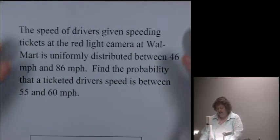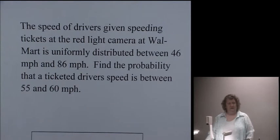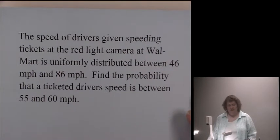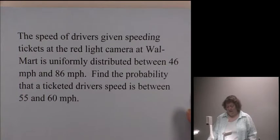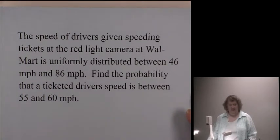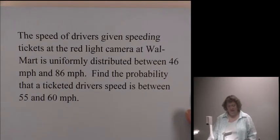So let's look, first of all, at the example that I have. In dealing with uniform distributions, we do not have a lot of examples to pull from. So for this one, I've kind of stretched it, and it may not be the best example, but it is the example I came up with. It says the speed of drivers given speeding tickets at the red light cameras at Walmart is uniformly distributed between 46 miles per hour and 86 miles per hour. Find the probability that a ticketed driver's speed is between 55 and 60 miles per hour.